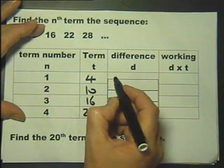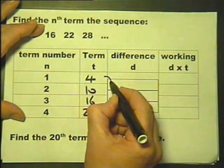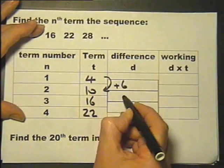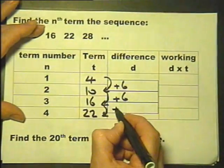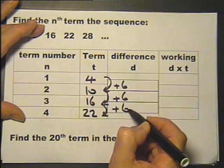Now the differences. In other words, this is going up by 6. The term to term is to add 6. 6 on to 16 goes 22. So these are the term to term differences.